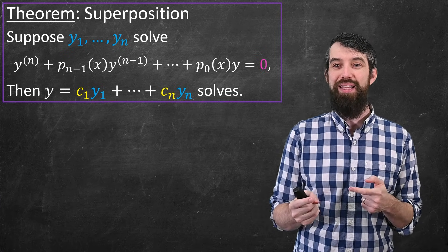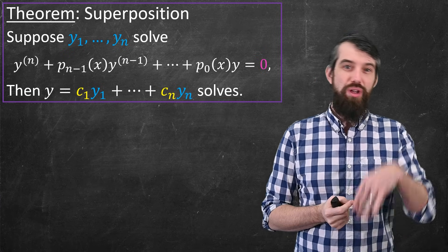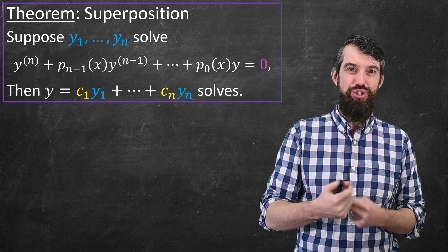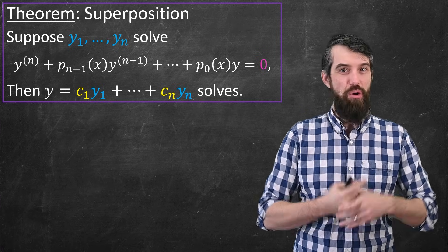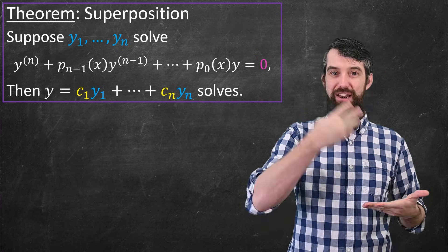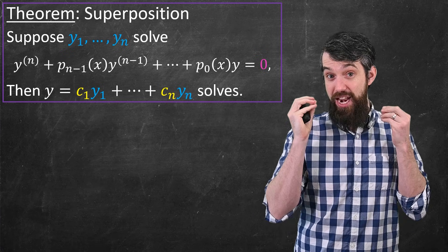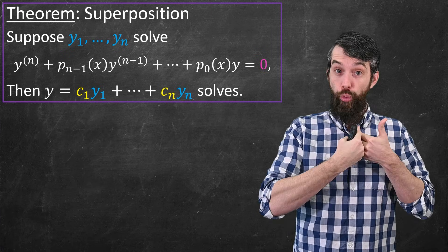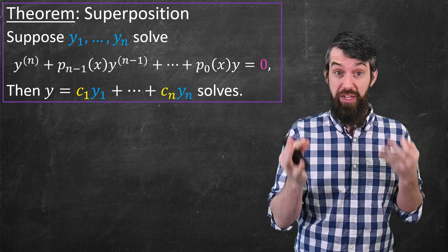This is extremely powerful, because if you didn't have a theorem like this, you could go and find one solution, you can find two solutions, you can find a hundred solutions, and you'd be like, okay, great, you found a hundred, but there could be infinitely many. How do you find all the others? Well, this is going to get us a long way to being able to rapidly expand all the solutions that we can find.